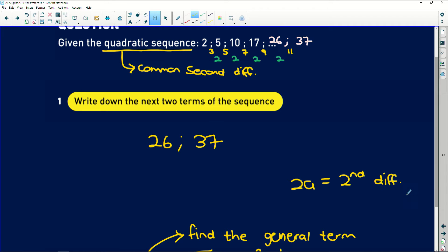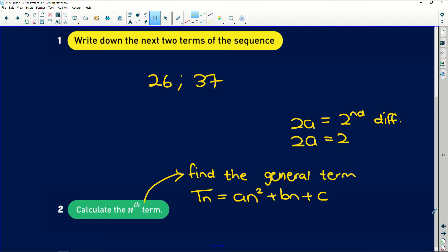Always in a quadratic formula. So remember our second difference was 2. So 2a equals 2, which means that a equals 1.